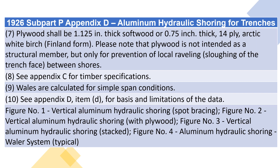7. Plywood shall be 1.125-inches thick softwood or 0.75-inch thick, 14-ply, arctic white birch, Finland form. Please note that plywood is not intended as a structural member, but only for prevention of local raveling and sloughing of the trench face between shores. 8. See Appendix C for timber specifications. 9. Whales are calculated for simple span conditions. 10. See Appendix D, item D, for basis and limitations of the data.